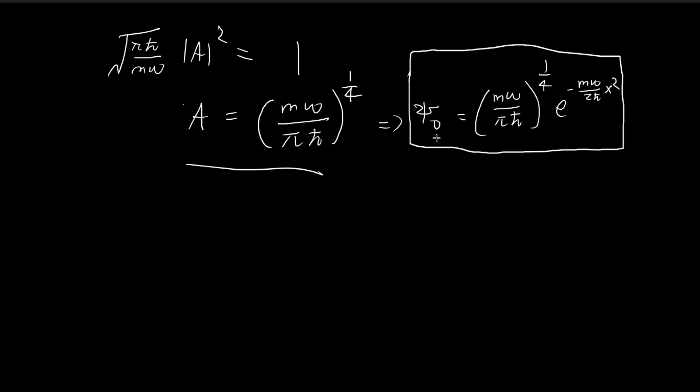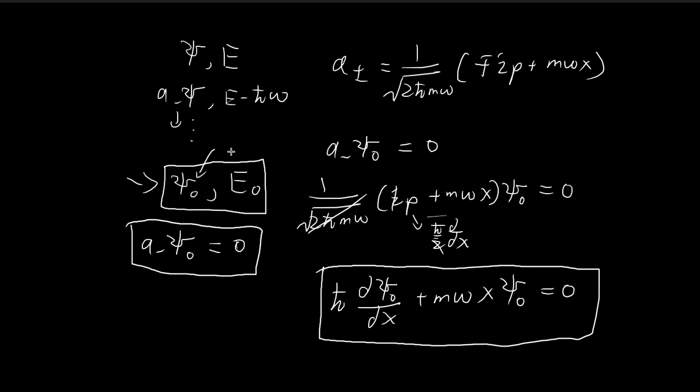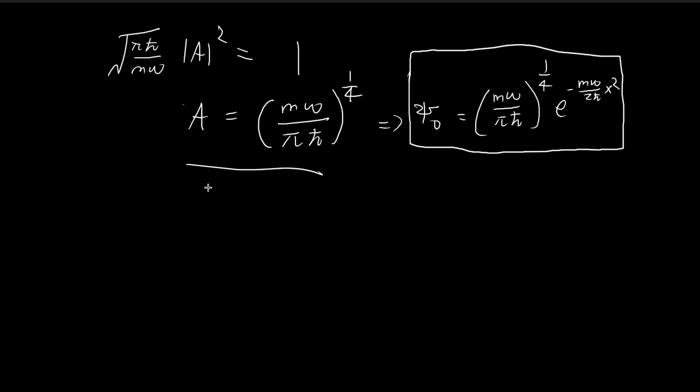Now we've found the function ψ₀, so we can also find the energy level E₀. Recall that we have a function and its corresponding energy level, which we can find using the Schrödinger equation. ψ₀ is a solution to the Schrödinger equation, so it should satisfy this expression with that corresponding energy level. For this H, I'm going to use one of the results we derived before, from one of the earlier videos.